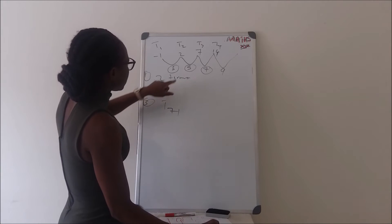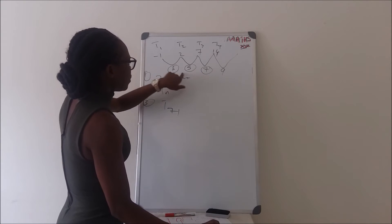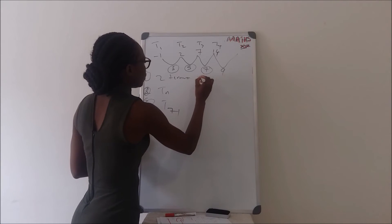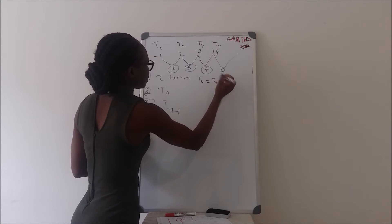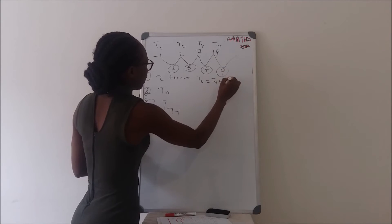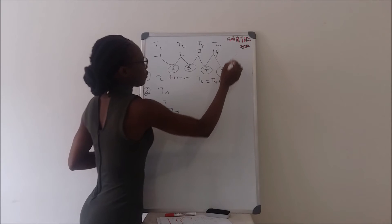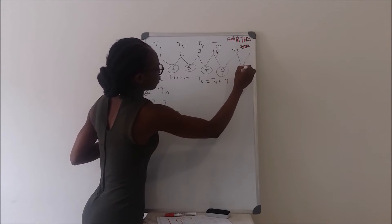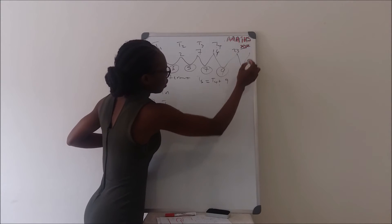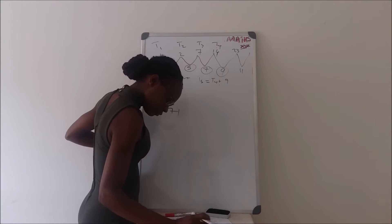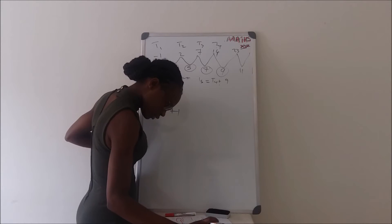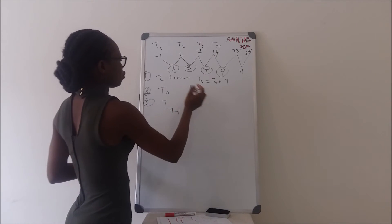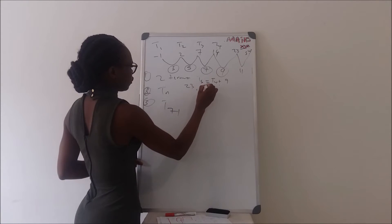From here you can see that these are odd numbers: 3, 5, 7. So the next one must be 9. To get the next two terms, T5 must be T4 plus the difference of 9, which will give us 23. And the next odd number is 11, so plus that gives us 34.